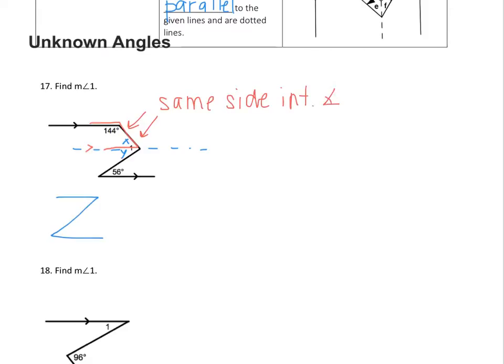And these angles equal 180 degrees because, again, they're supplementary. That means I can set up an equation, X plus 144 equals 180. Therefore, when I subtract from both sides, I end up with X equals 36.